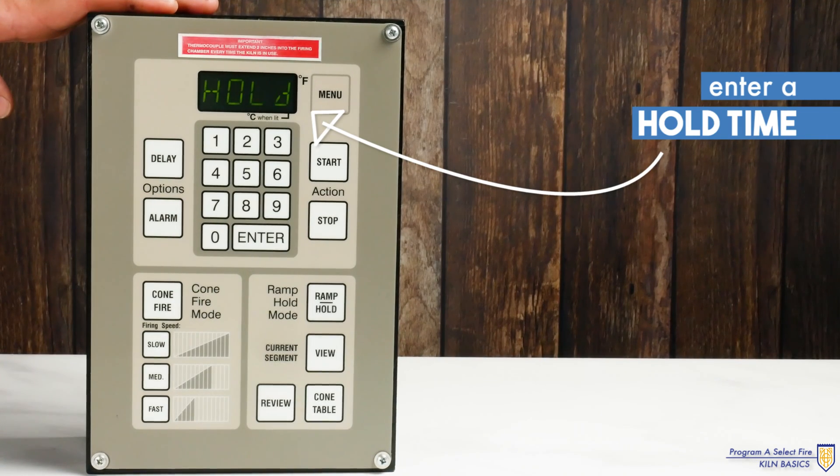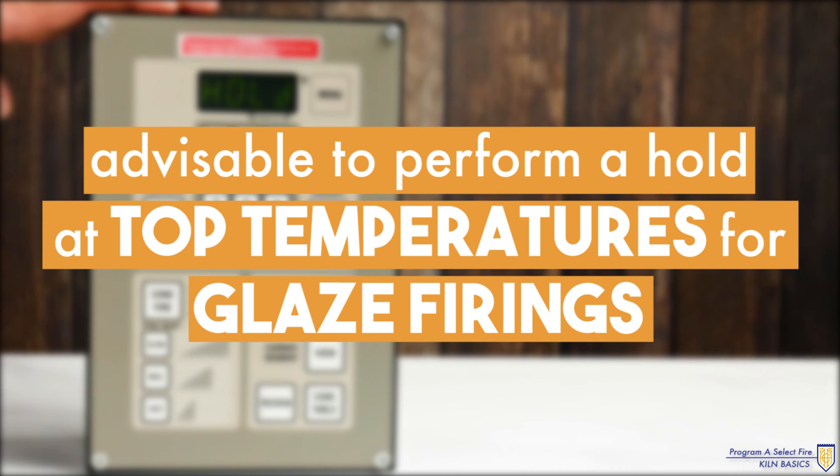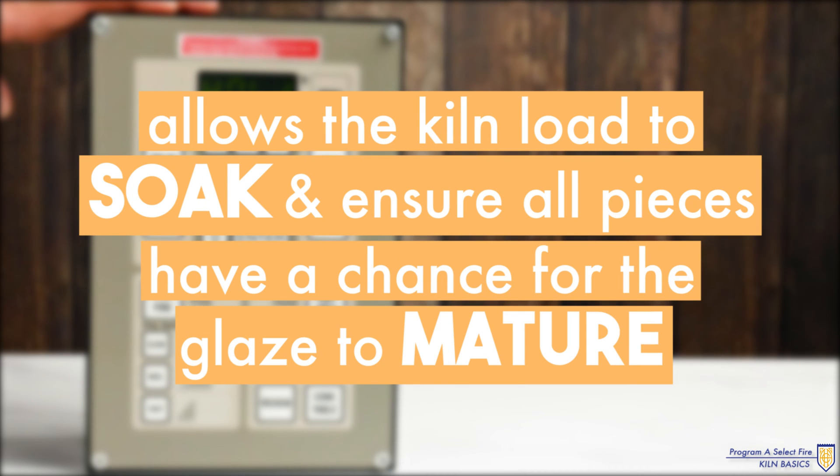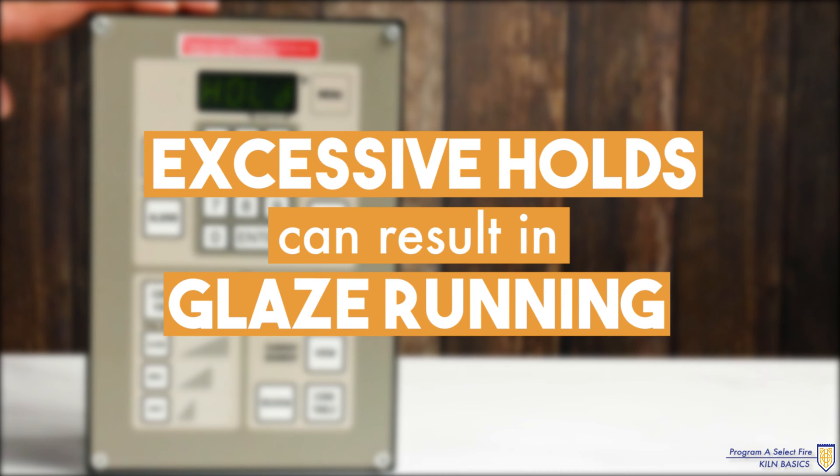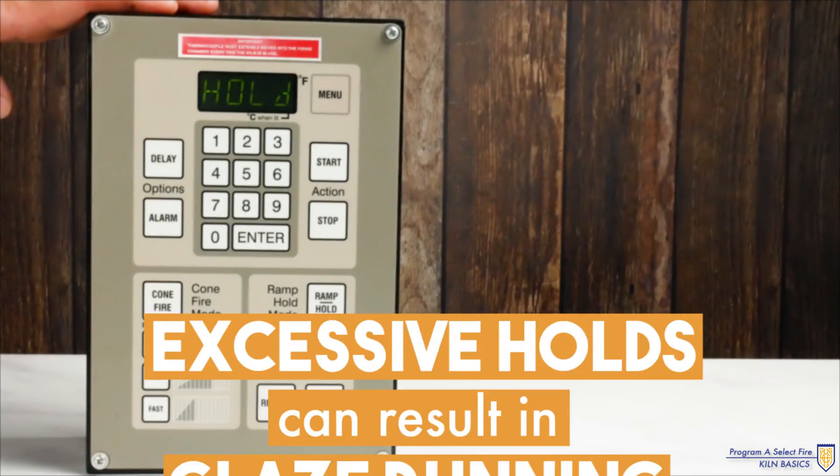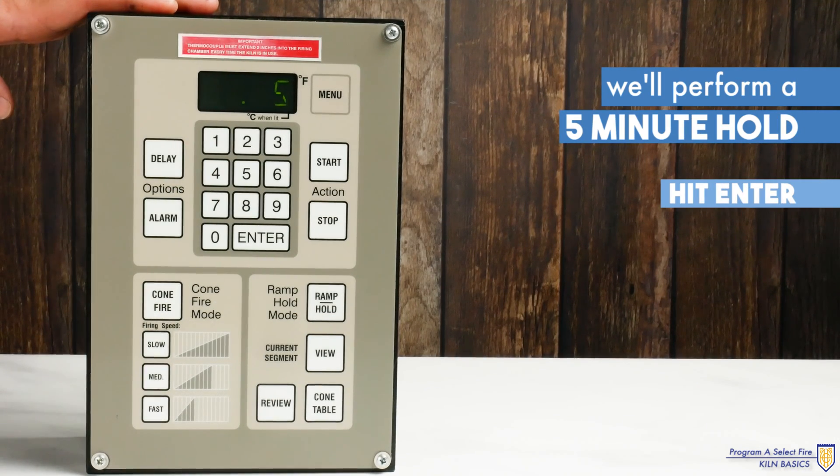It will then prompt you to enter a time for a hold. It is advisable to perform a hold at top temperature for glaze firings. This allows the kiln load to soak and ensure all pieces have a chance for the glaze to mature. Excessive holds can result in glaze running. We will perform just a five minute hold and hit enter.